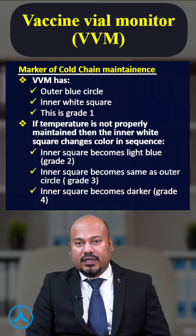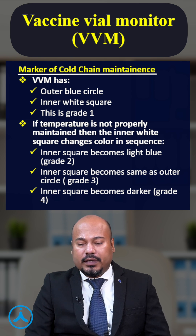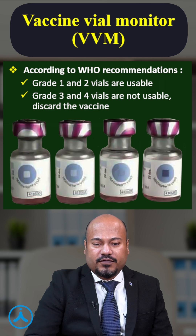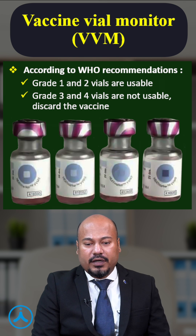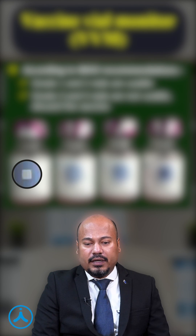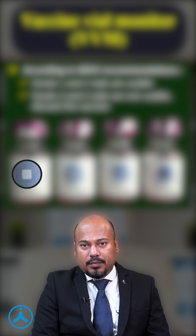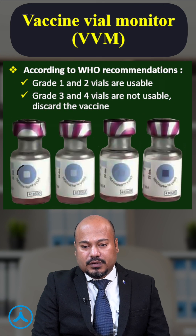Let us look at the vaccine vial monitor. In this vaccine vial monitor you can see that there is an outer blue circle and an inner white square. This is normal vaccine temperature maintenance — Grade 1.